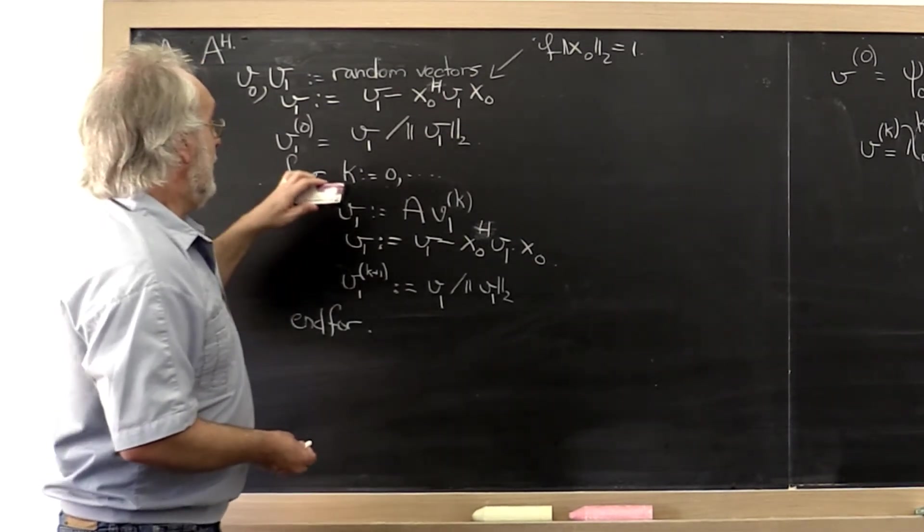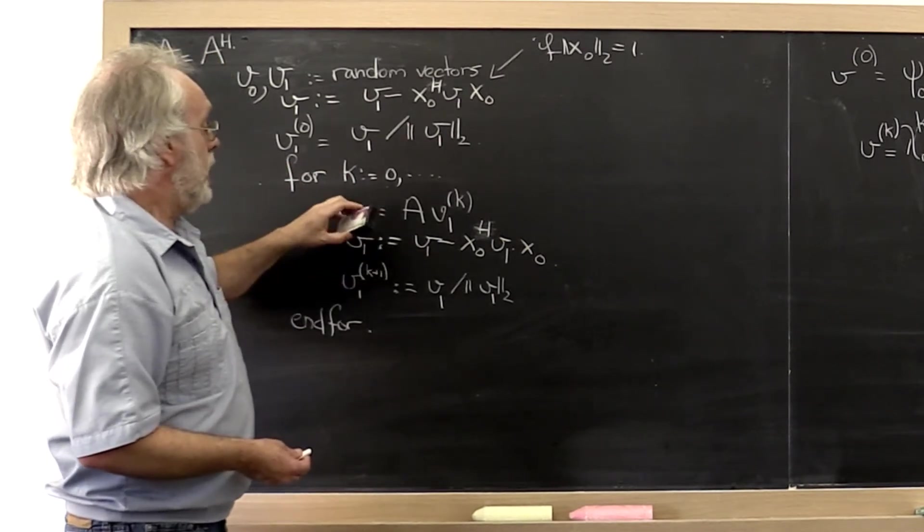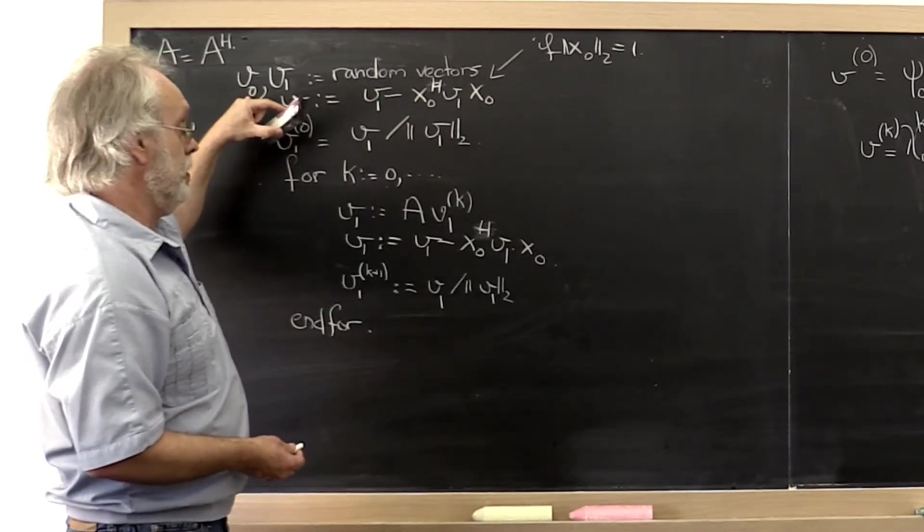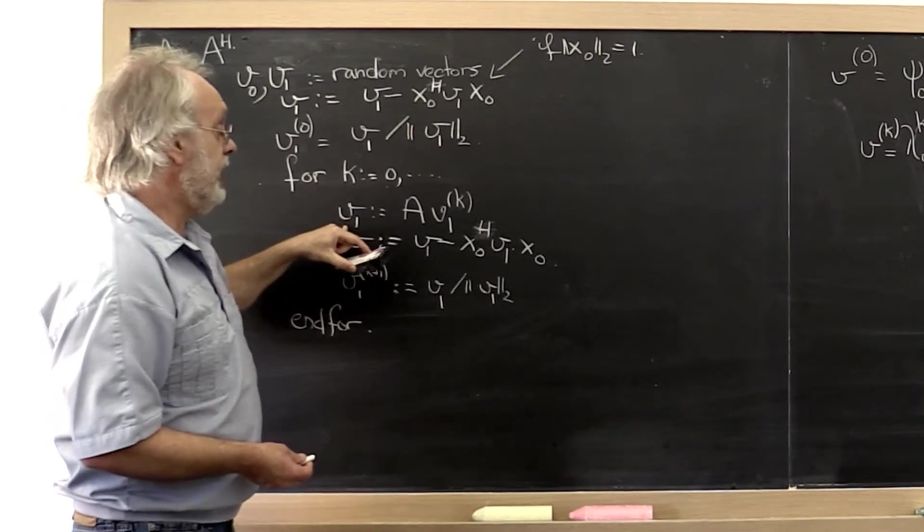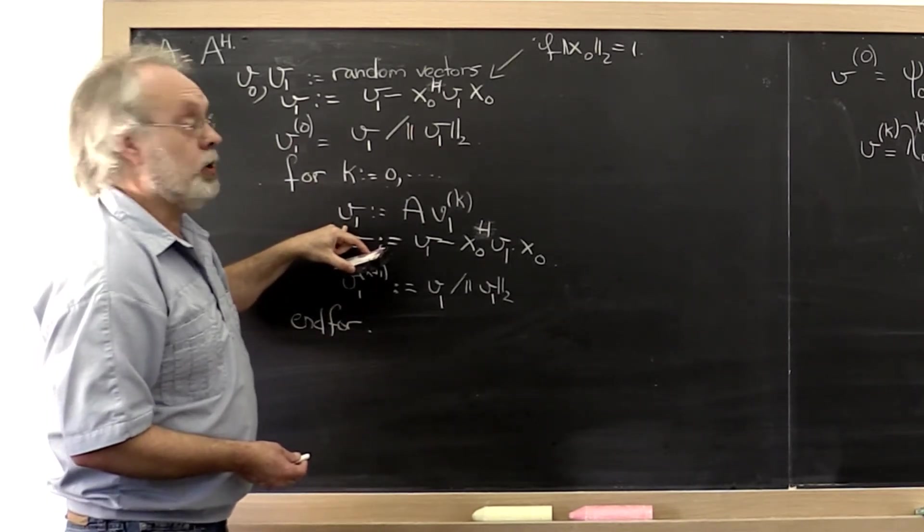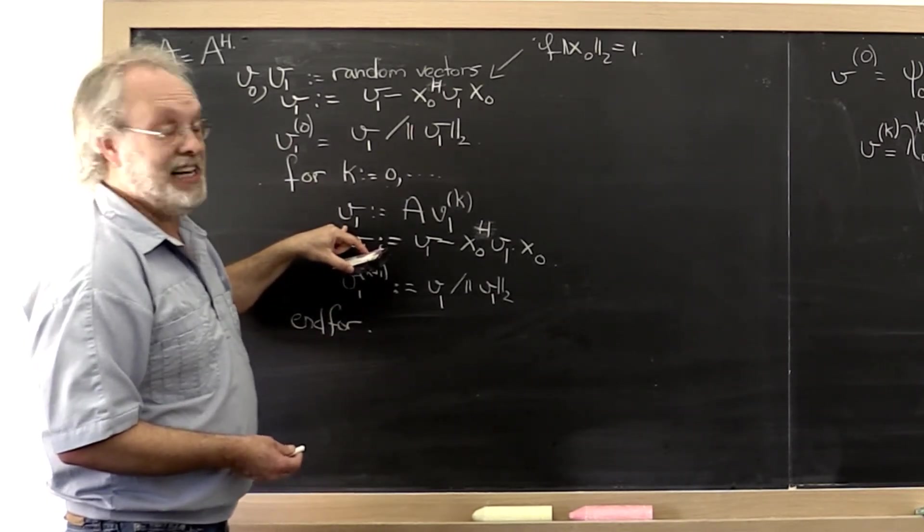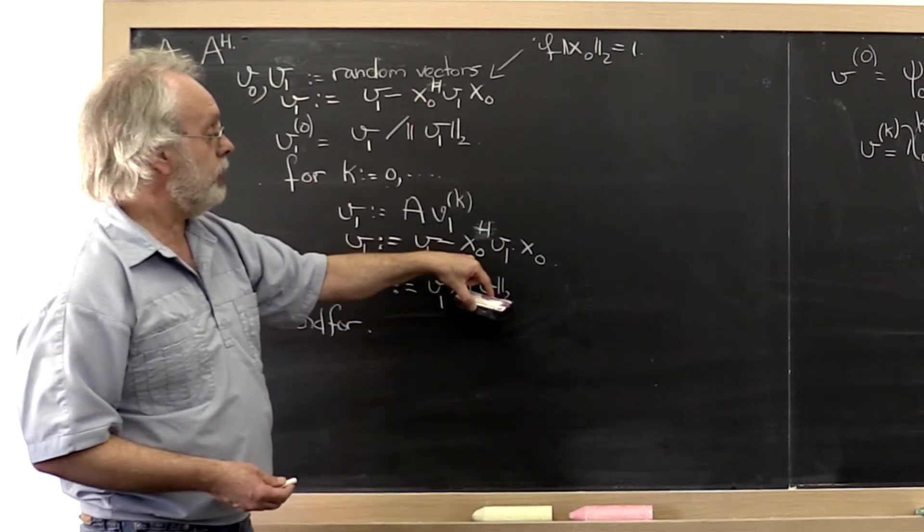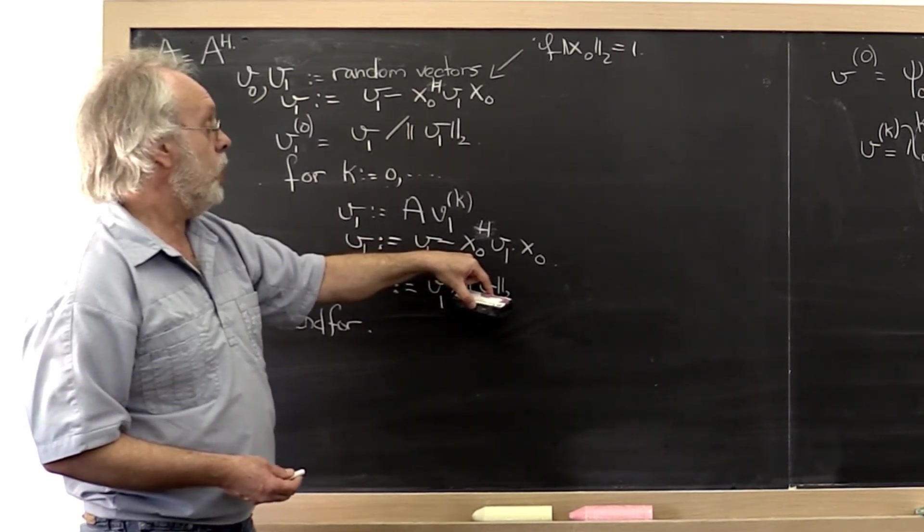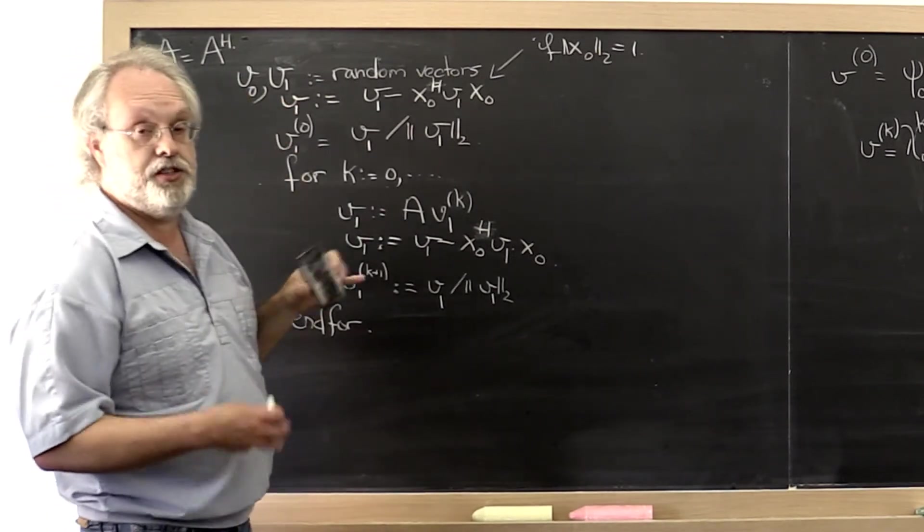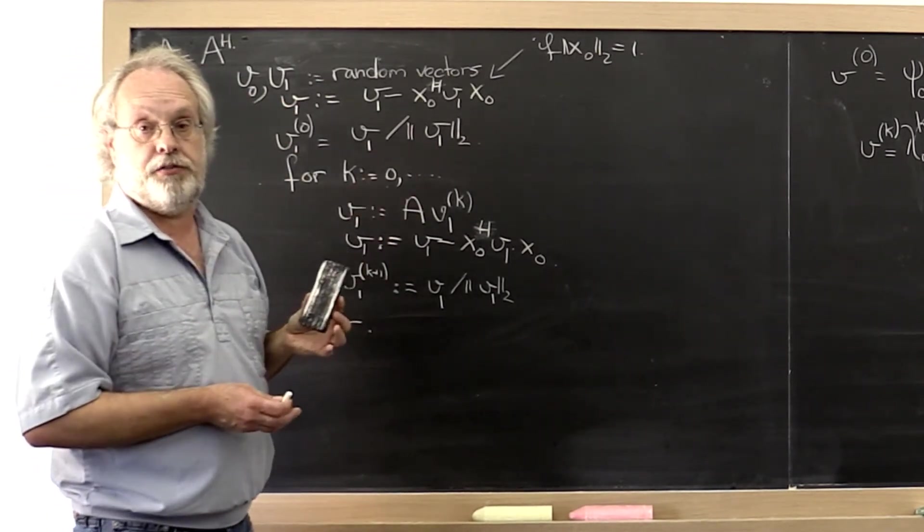And then let's run our power methods where we simply run the power method with v0 and we run this modification of the power method with v1.